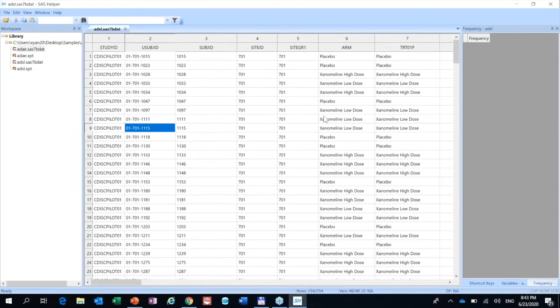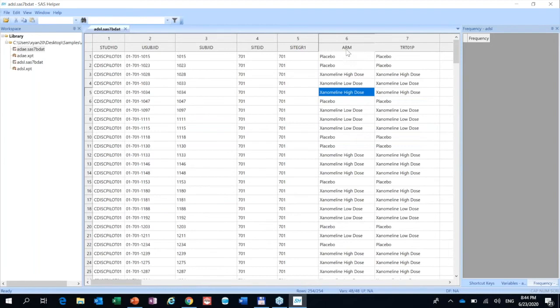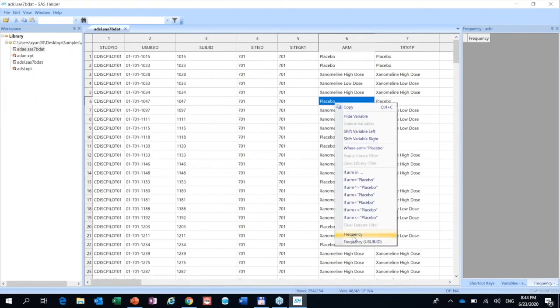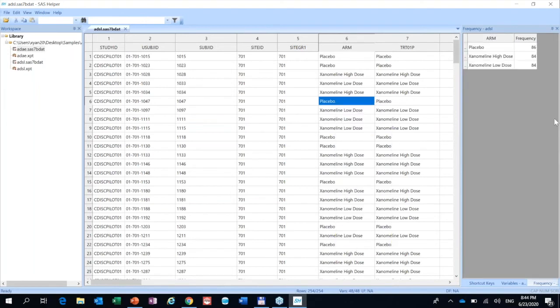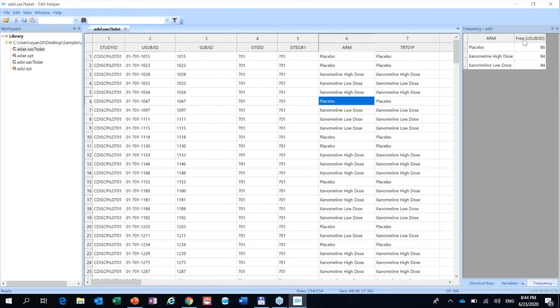Maybe I can show how to quickly get the frequencies. For example, if we want to do the frequency for the ARM, just right click on any value. You will get the context menu. Here, frequency. Click the frequency, you will get the distinct values and the frequencies. We have another one to count frequency as distinct user subject ID. If I click here, you can see the frequency. The column header is changed to frequency user subject ID. But the number doesn't change. The reason is because this is an ADSL dataset. Let's change to ADAE. For example, here we use TRTA, the actual treatment. Let's do the frequency. This is the number. But if we do the frequency by user subject ID, you can see it's changed.